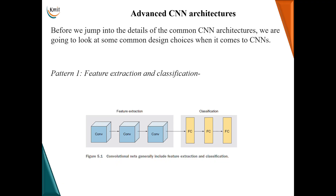Before starting with CNN architectures, let us quickly review the different design choices we need to make to have a clear idea of CNN. The first design pattern is feature extraction and classification — the two main components of CNN. In feature extraction we have a series of convolutional layers, and in classification we have a series of fully connected layers.